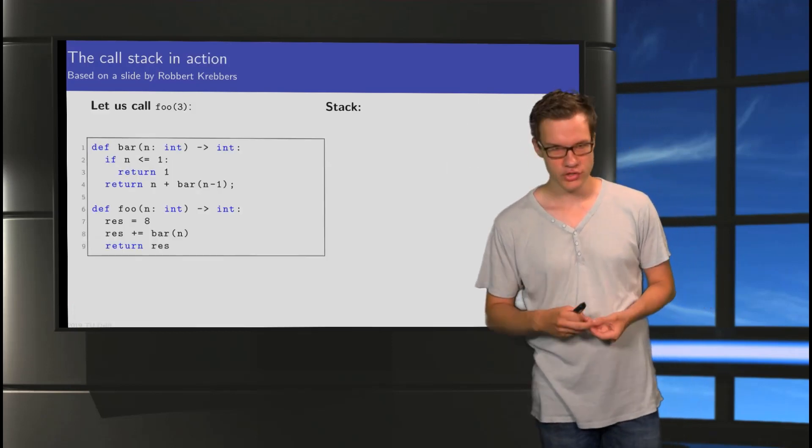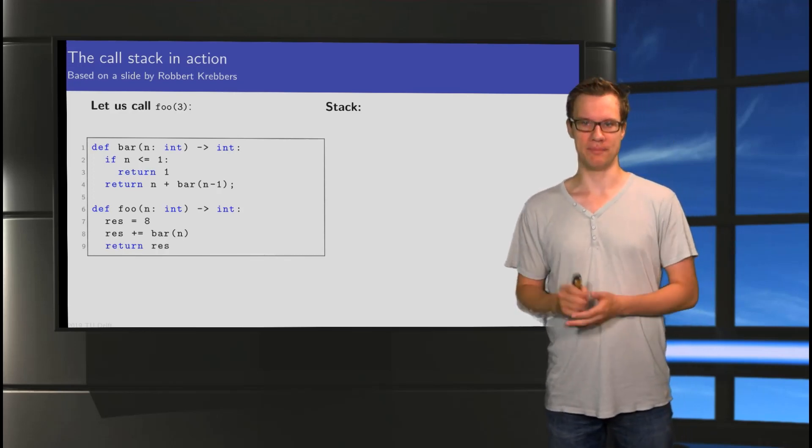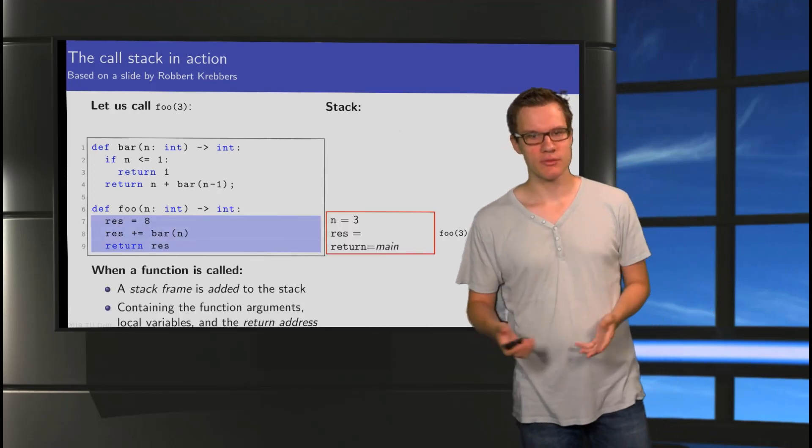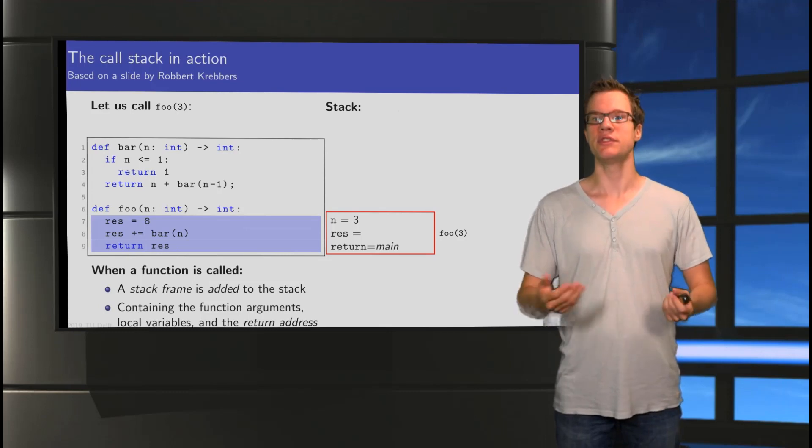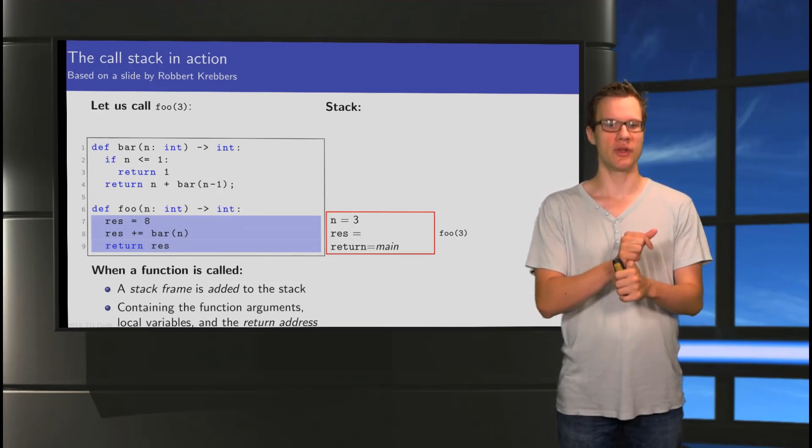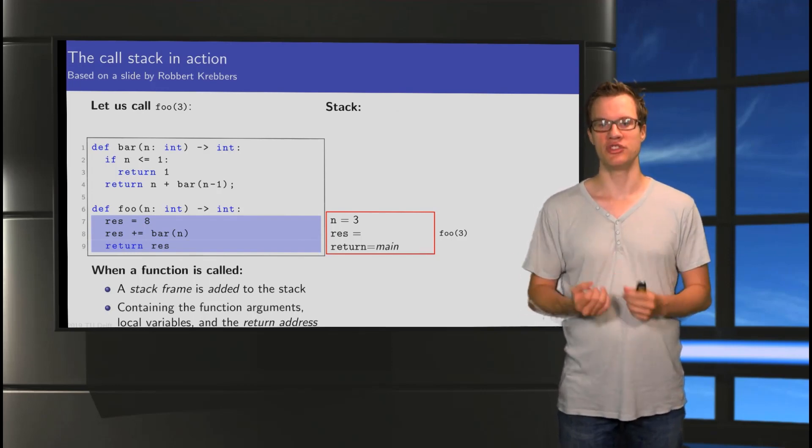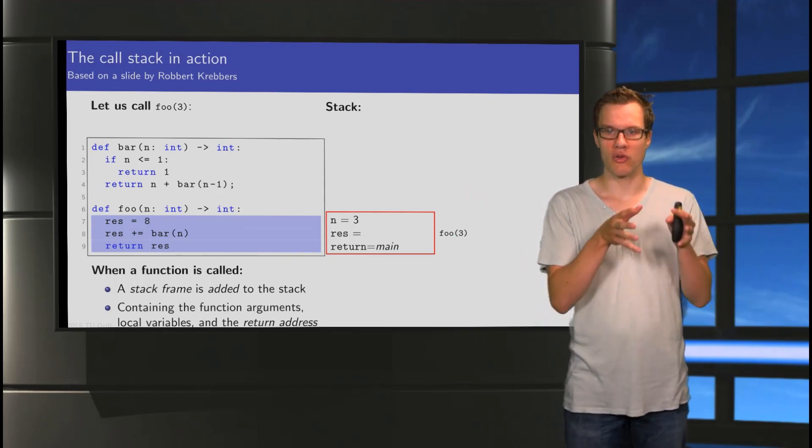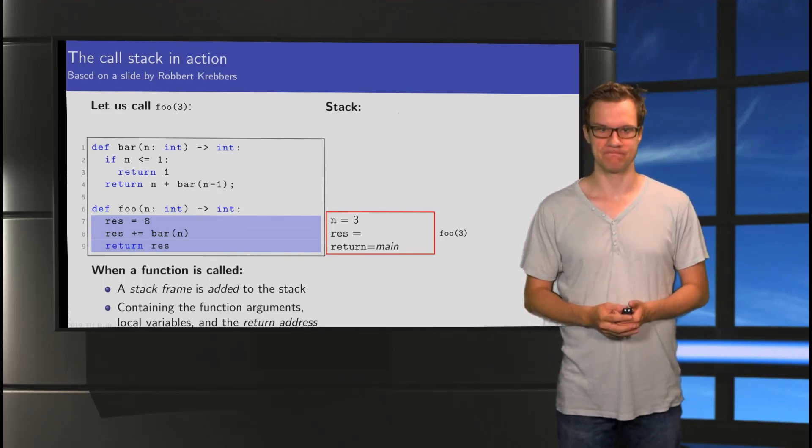So, let's take a look at what that looks like. So, here's a bit of code. Two functions, bar and foo. And what we're going to do is we're going to call foo with the parameter 3. So, here we go. The first thing that we do is we create a stack frame for this function foo. And it stores these three things. The argument to the function, n equals 3. It reserves some space for local variables, in this case res. And it remembers where it needs to go back to once it's done, which is somewhere in the main function.